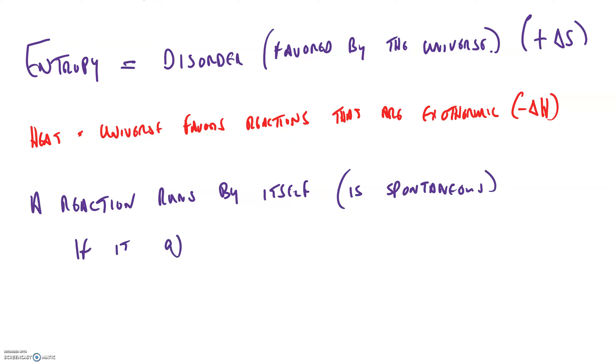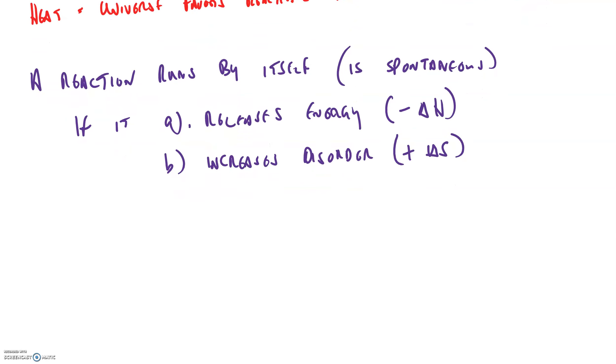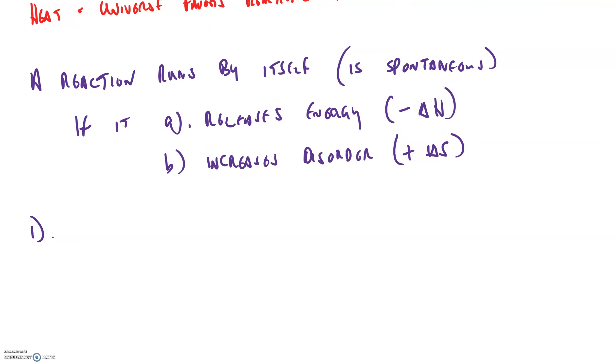If it releases energy, in other words, it has a negative delta H. And if it increases disorder, it has a positive delta S. Now, there are certain combinations. We could say that combination one, a reaction has a negative delta H and a positive delta S. This kind of reaction is always spontaneous, meaning it always runs by itself. The exact opposite, a positive delta H and a negative delta S. In other words, requires increase of energy and it results in a decrease in disorder. This kind of reaction is never spontaneous.